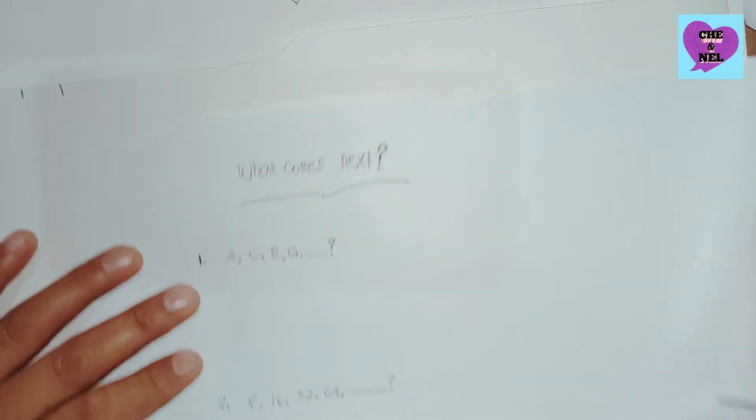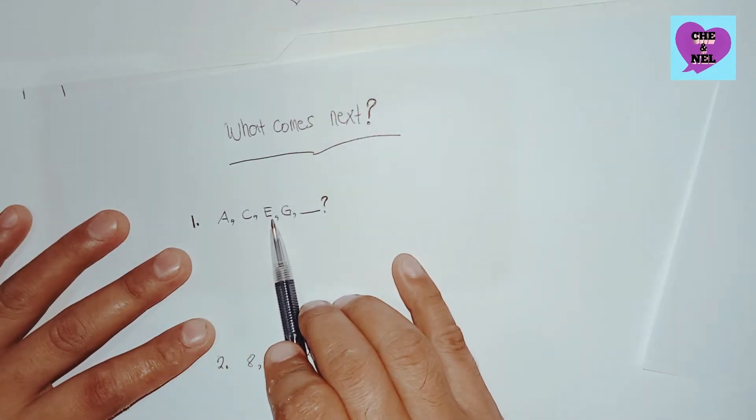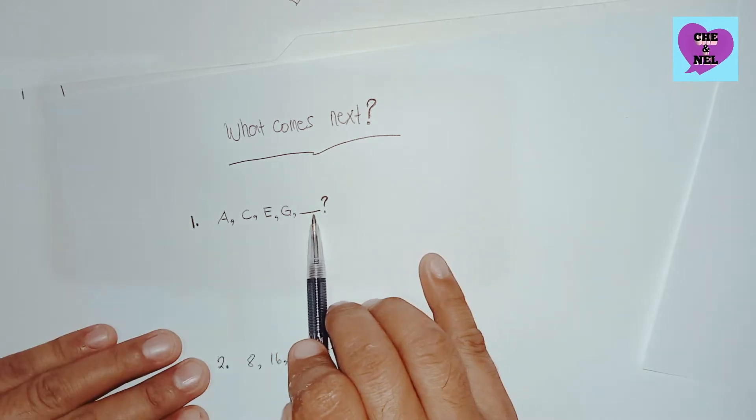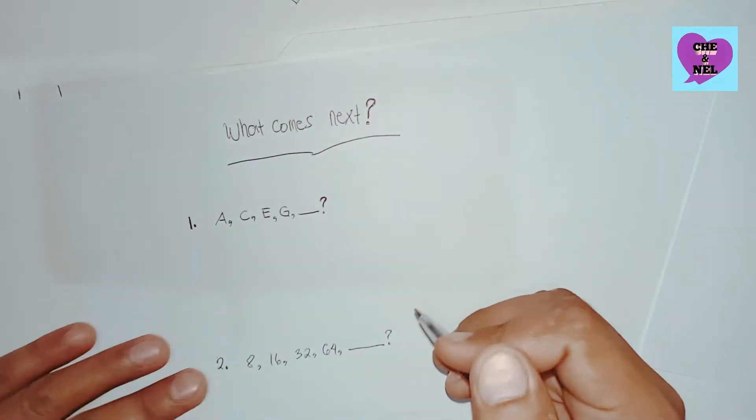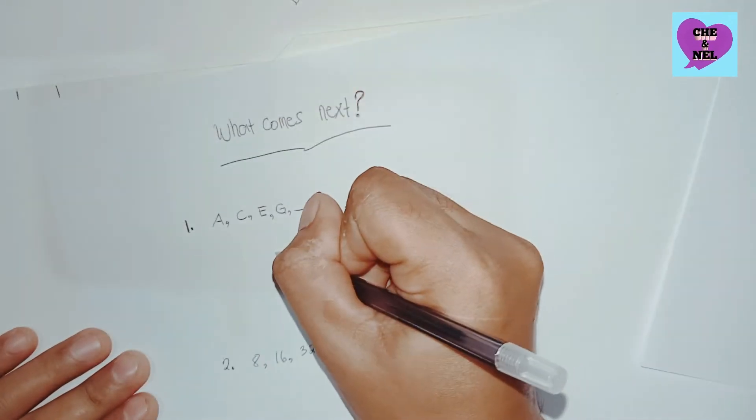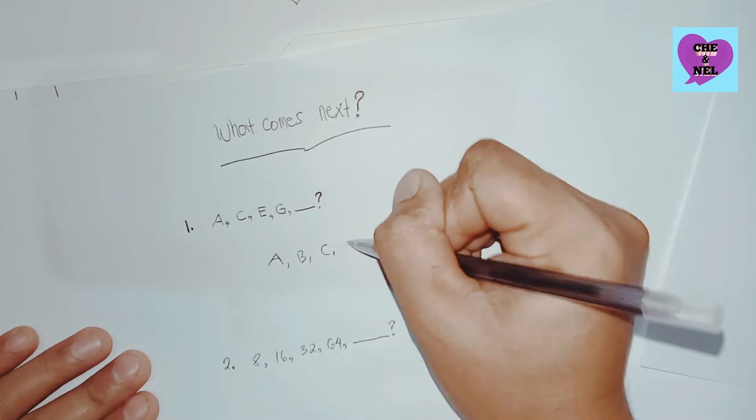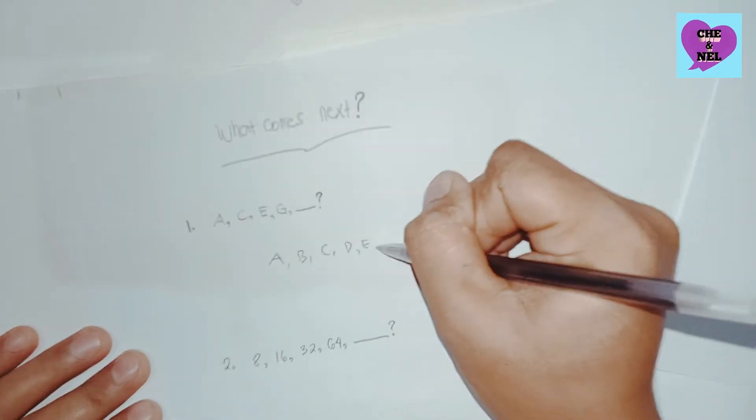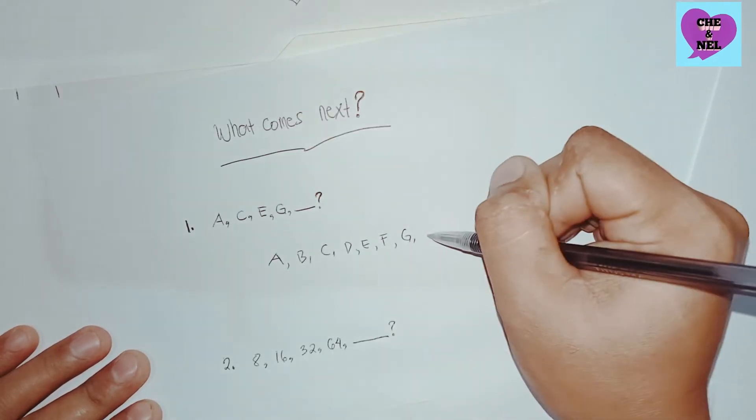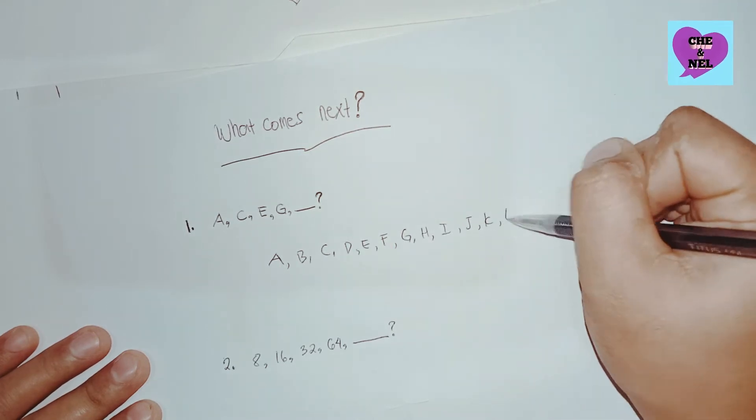We have here A, C, E, G in the blank, so it's an alphabetic pattern or sequence. We have to write the English alphabet: A, B, C, D, E, F, G, H, I, J, K, L, M.